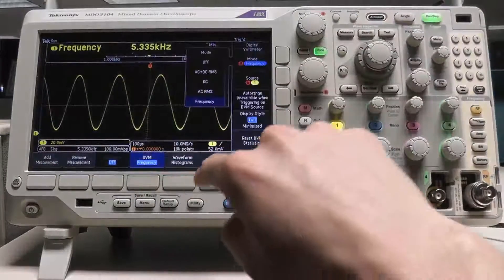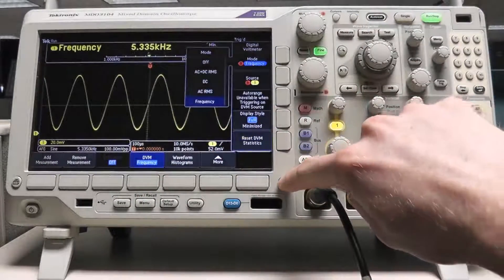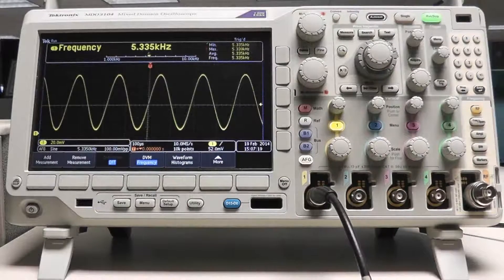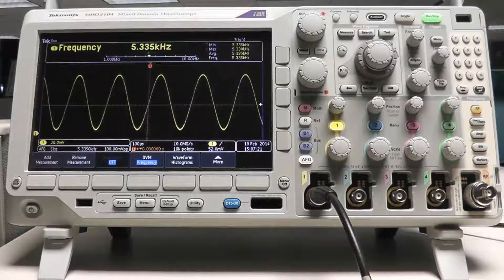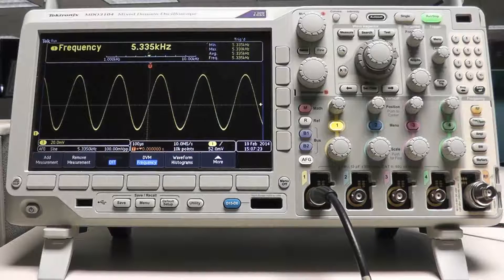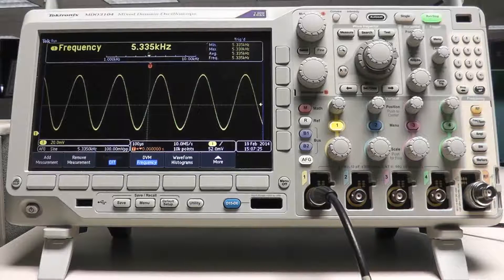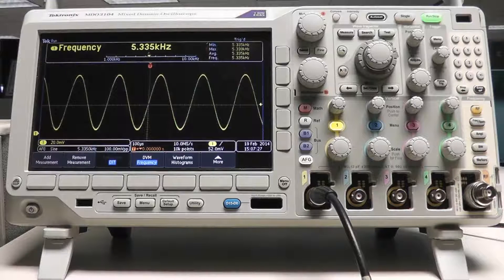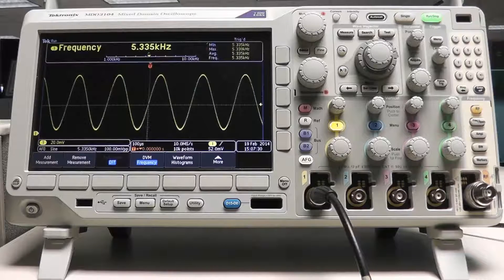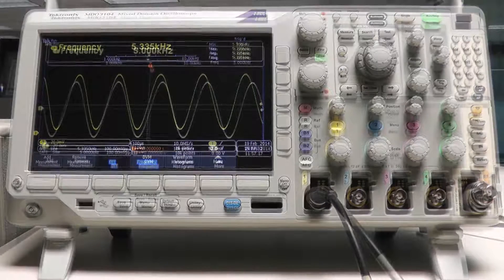Measurement statistics are shown in the right-hand corner of the DVM display. You can clear the DVM statistics by going to the DVM menu and then pressing the Reset DVM Statistics soft key. This will remove the maximum, minimum, and average values on the right side of the DVM display and replace them with the current value.